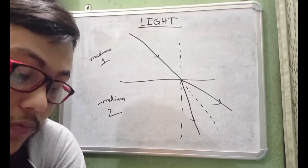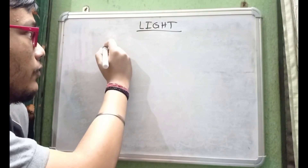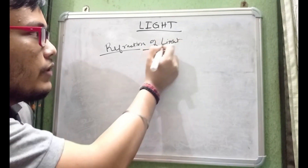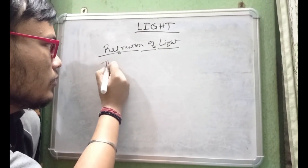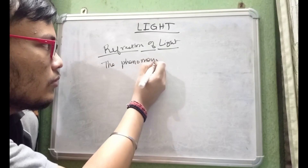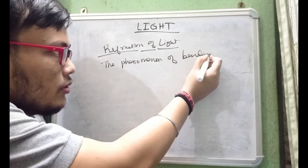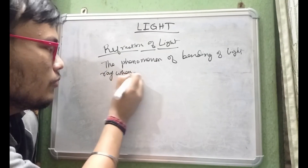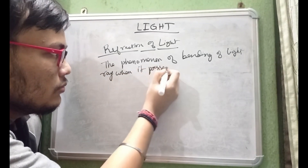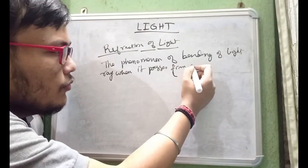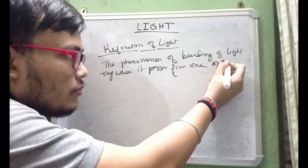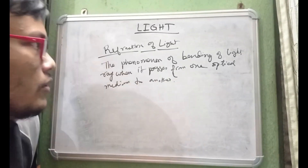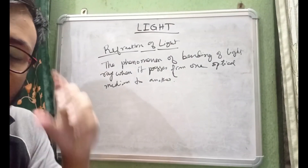So today in this video we will be focusing on the refraction of light. Refraction of light is the phenomenon of bending of a light ray when it passes from one optical medium to another. This is known as the refraction of light.